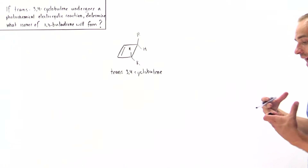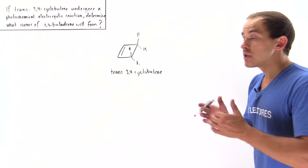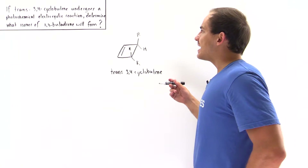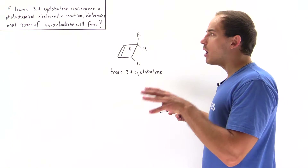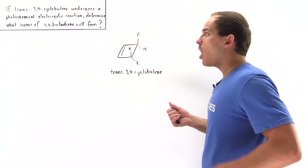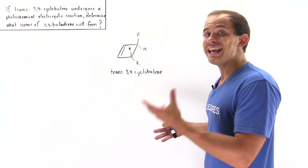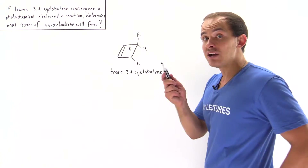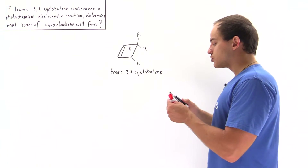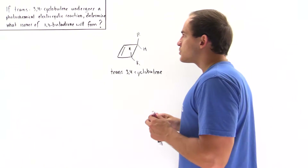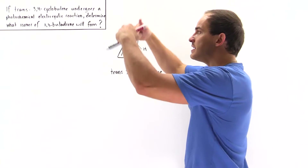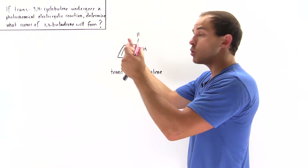The energy source is light, so we have a photochemical reaction. The only type of rotations possible in a photochemical reaction are the two types of disrotations — conrotations only take place in thermal electrocyclic reactions.